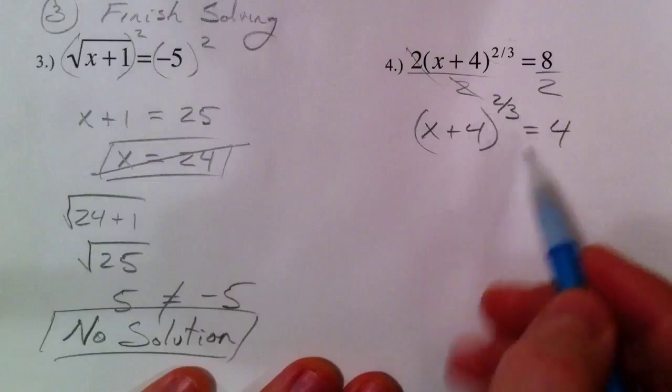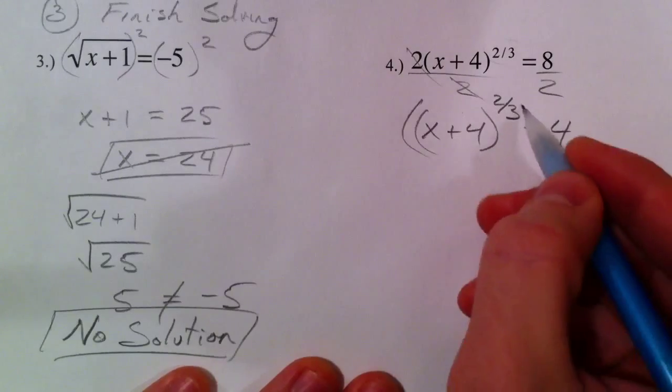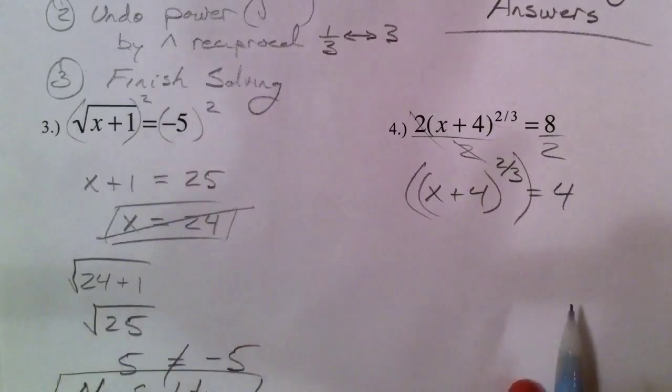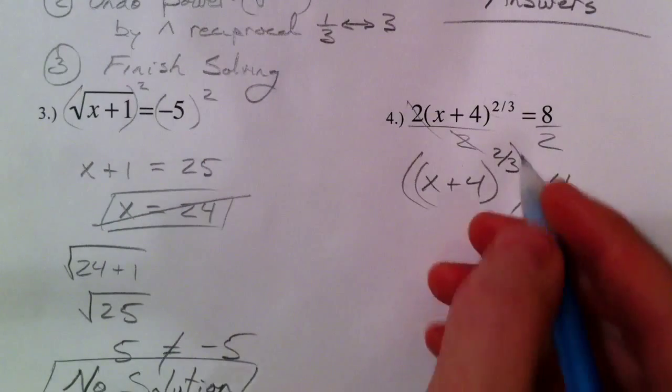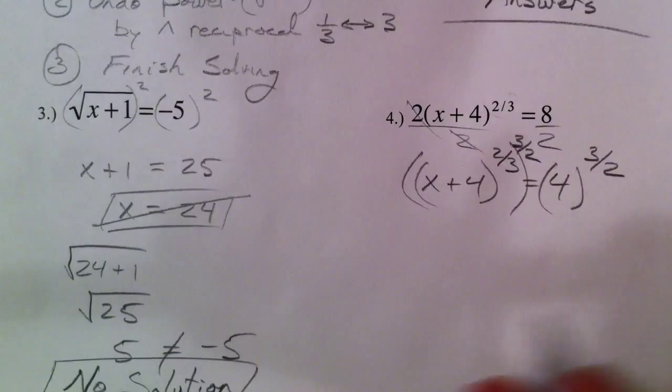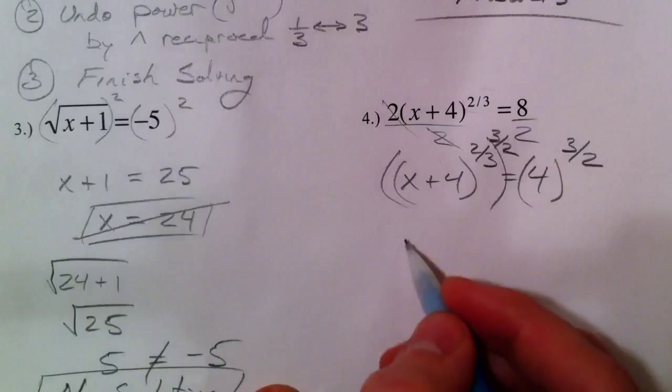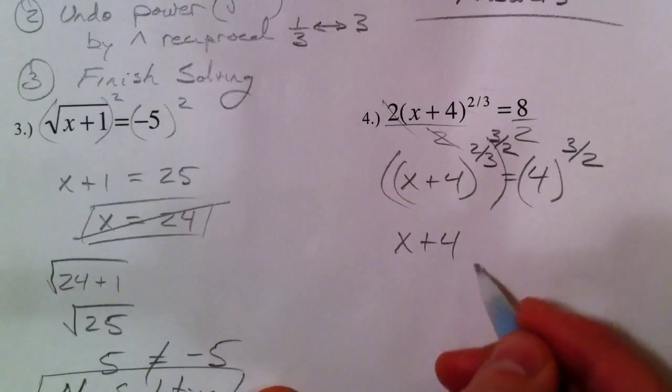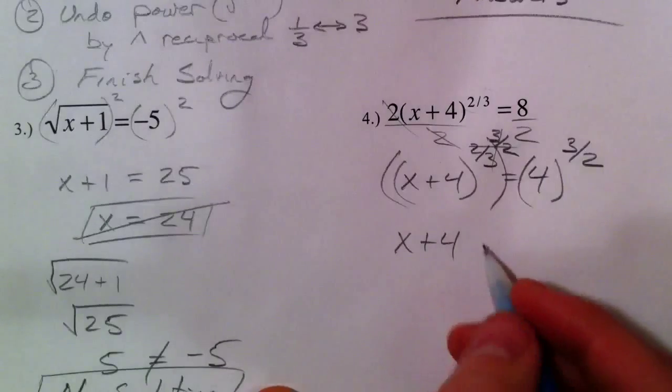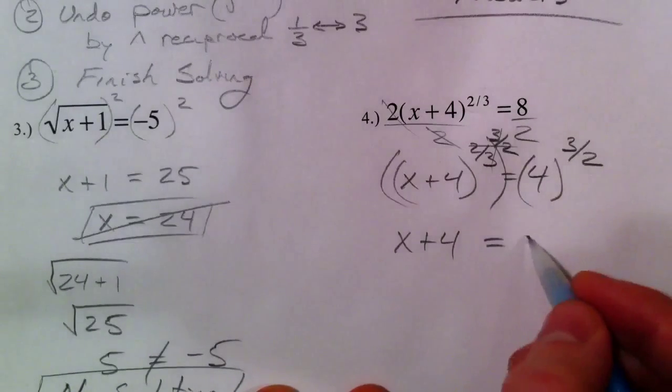Now, undoing a 2 3rds power looks kind of tricky, but what we said before, raise it to its reciprocal. Reciprocal of 2 3rds, just flip it over. Raise it to the 3 halves, and now this is a good review from the first part. x plus 4, 2 3rds 3 halves, the whole reason we did that, those multiply, they cancel out to 1, equals 4 to the 3 halves.